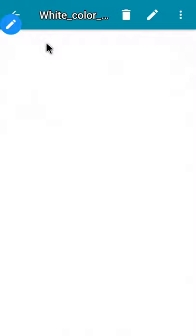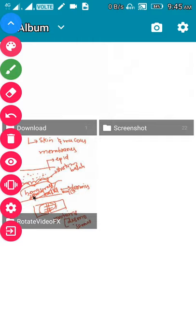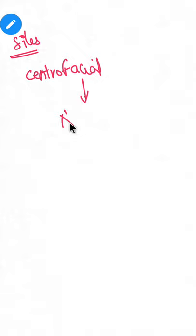Depending upon the sites where this melasma is present, we classify melasma into centrofacial, maxillary, or mandibular. Depending on sites, this can be centrofacial, which means the melasma is present at three places mainly: nose, malar eminences, and forehead.